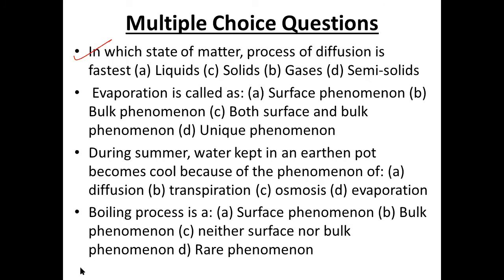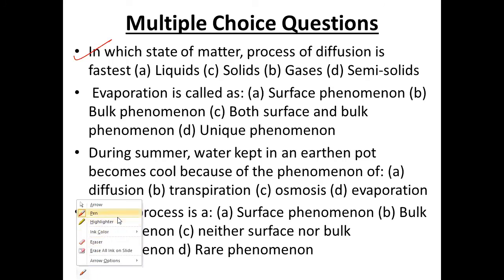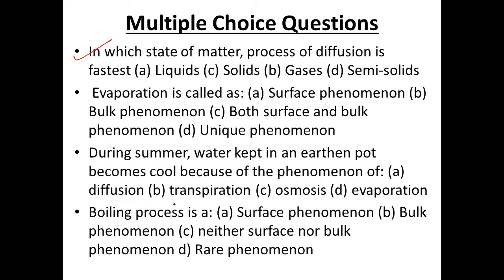During summer, water kept in an earthen pot becomes cool because of the phenomenon of — A. diffusion, B. transpiration, C. osmosis, D. evaporation. The answer is D: evaporation.